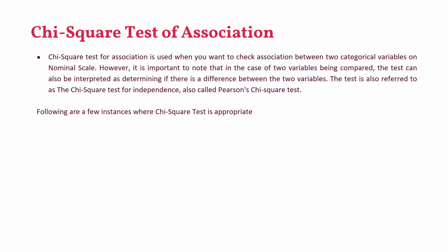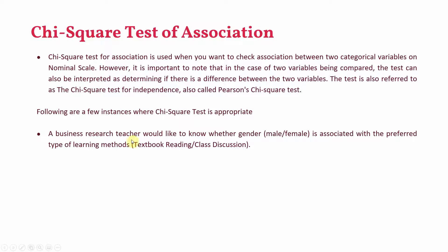When can you use the Chi-square test? Following are a few scenarios where it is appropriate. A business research teacher would like to know whether gender — male or female — is associated with preferred type of learning methods. In both cases, both variables are on nominal scale — there is no order between the values.